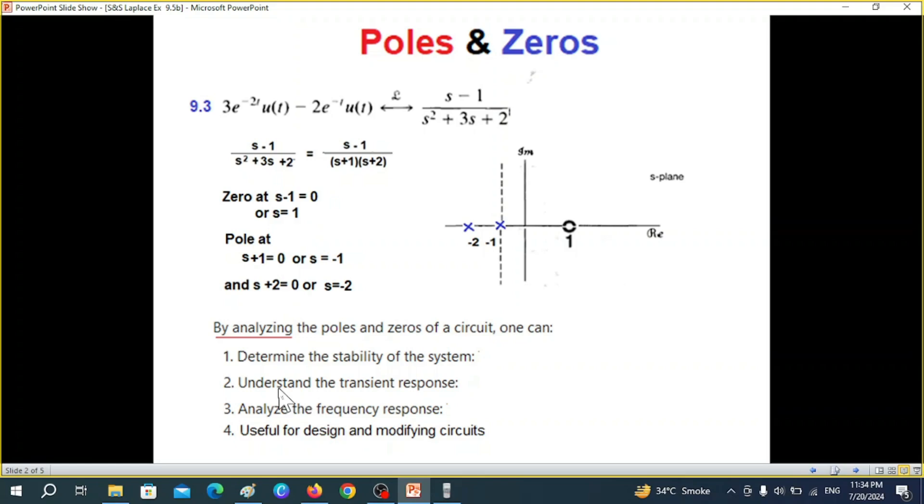Then it gives an understanding about the transient response of the circuit. Then it gives an analysis about the frequency response of the circuit. And also it is useful for designing circuits. So which point we need to avoid and which point we need to incorporate, we can see from the pole and zero diagram.